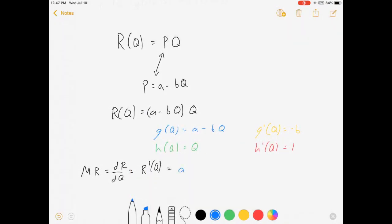So that's a minus bq times 1 plus g prime, which is minus b, times h, which is just q. What is that? That's g times h prime plus g prime times h. There's our rule for us.